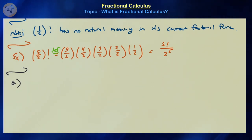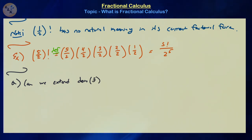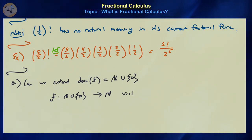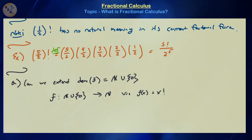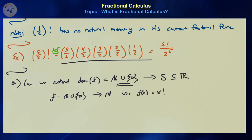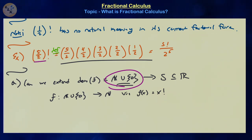A nice question is: can we extend the domain of the factorial function F, currently defined on the natural numbers union zero, to the set of real numbers or some proper subset larger than that — for example, negative integers, rational numbers, or half-integers? Then perhaps this factorial representation will have some other meaning. The easiest way is via linear extrapolation.